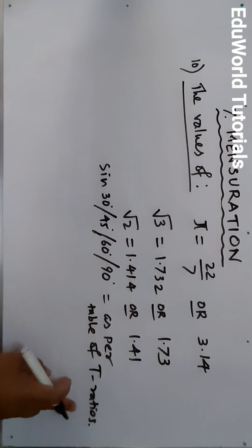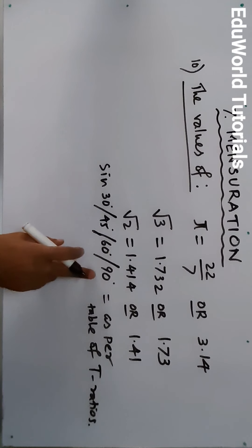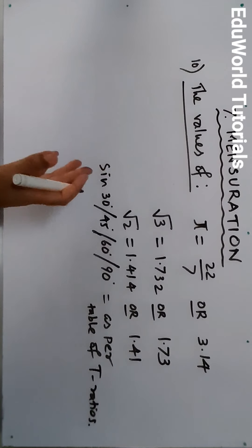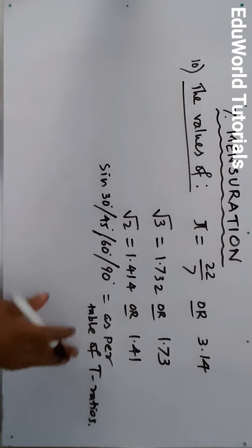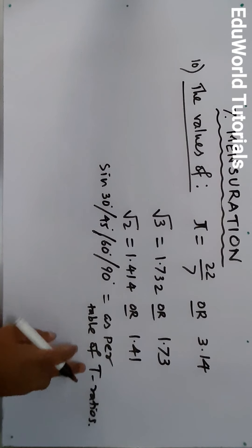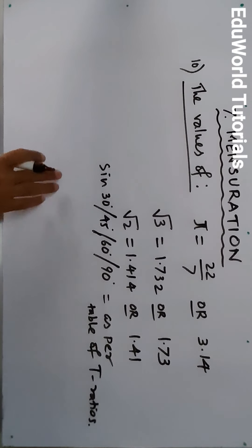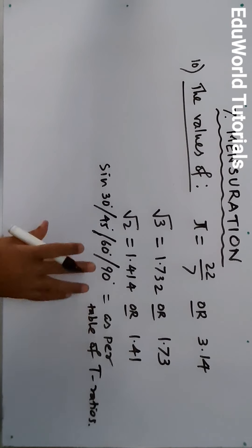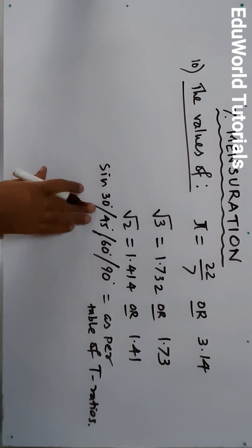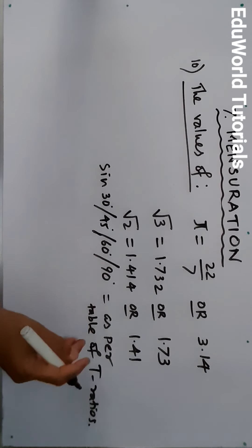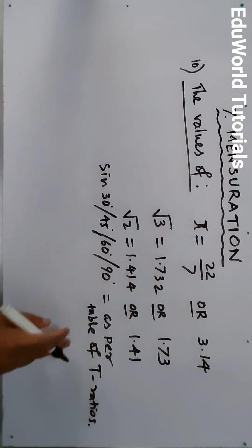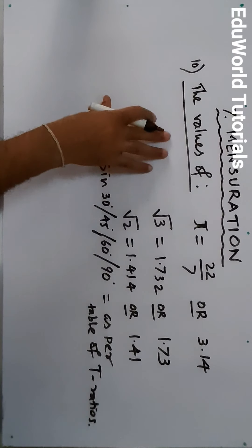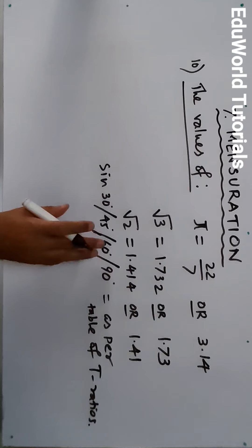As per the table of trigonometric ratios — sin 30°, sin 45°, sin 60°, sin 90° — you need to remember these values when solving sums based on area of segments of a circle. You have to remember the table of T-ratios where we know the values of sine, cos, tan, cosec, and cot. These values of sine 30°, 45°, 60°, 90° will not be given in the question, so you must remember them.